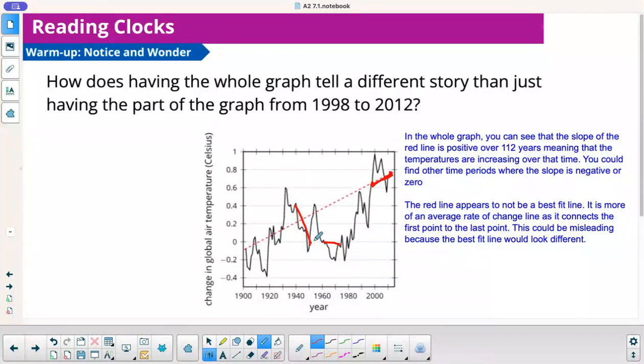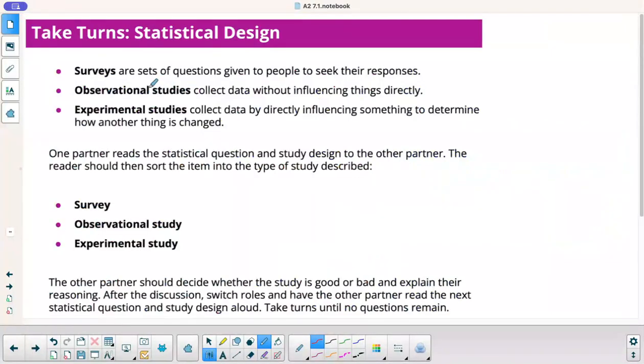So, again, there are many different things that you could ask about this and ways you could spin it. Another thing I observed, the red line appears to not be a best fit line. It's more of an average rate of change because we're going from the starting point to the ending point. This could be misleading because the best fit line could look much different. All right, here's some information that you're going to need to know here. You're going to want to write these down somewhere. A survey is a set of questions given to people to seek their responses. Observational studies collect data without influencing things directly, and experimental studies collect data by directly influencing something to determine how another thing is changed. Usually, you see a test group or a placebo given so that you can measure it against not influencing them.